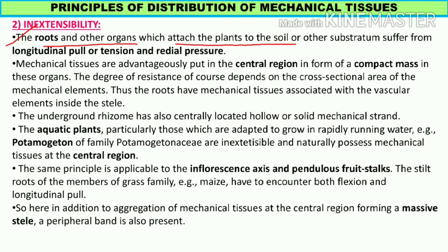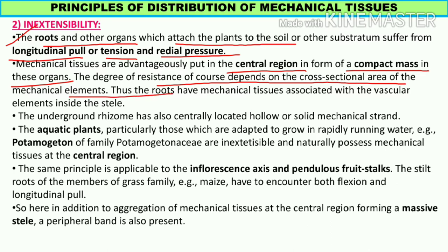Next is in-extensibility. The roots and other organs which attach the plants to the soil and other substratum suffer from longitudinal pull, tension and radial pressure. Root jo hai, wo hamesha longitudinal pull face karta rehta hai kyunki zameen ke neeche rehta hai, lambai mein bhi failna rehta hai. Soil ke particles ka tension unpe exert hota rehta hai aur radial pressure se bhi sahamna karte hain. Mechanical tissues are advantageously placed at the central region in the form of a compact mass in these organs.